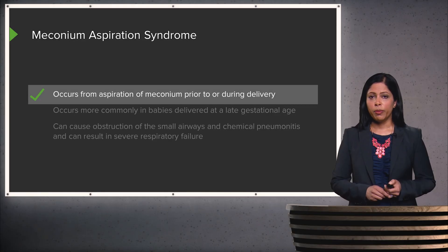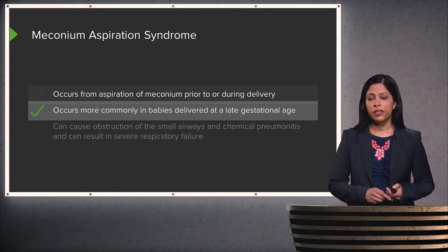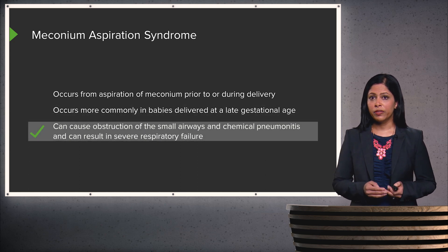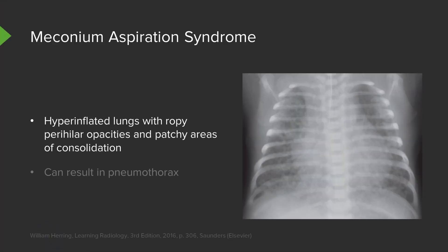Meconium aspiration syndrome occurs from aspiration of meconium just prior to or during delivery. This occurs more commonly in babies delivered at a very late gestational stage, and it can cause obstruction of the small airways and result in chemical pneumonitis, which can lead to severe respiratory failure. The lungs appear very hyperinflated, which is commonly seen. You also see ropey perihilar opacities and patchy areas of consolidation. In the perihilar region you can see ropey opacities in both lungs, and there's consolidation silhouetting the right hemidiaphragm. This can result in pneumothorax, which, if large enough, can lead to cardiopulmonary collapse.